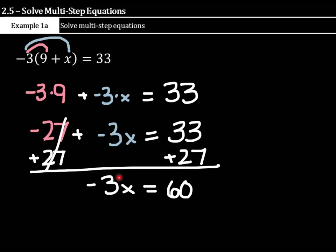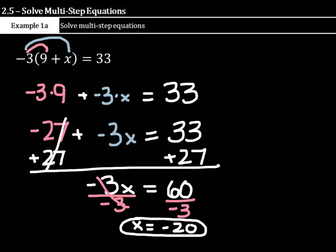And we're left with a negative 3x equals 60. Now, what is the opposite of negative 3 times x? Well, divide by negative 3 on the left and the right side, and x is going to equal 60 divided by negative 3 is negative 20. And that's our final answer.